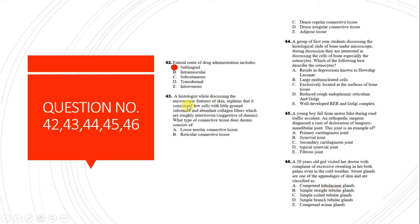Question 43: A histologist described skin containing few muscle cells, little ground substance, and abundant collagen fibers in the dermis. What type of connective tissue does the dermis consist of? The dermis of the skin contains dense irregular connective tissue.